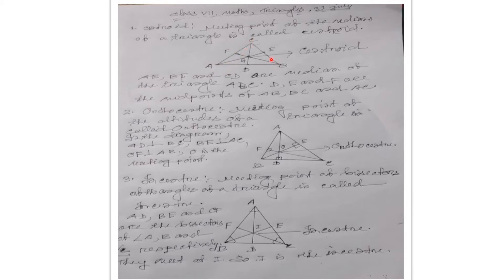Therefore, the meeting point of the medians of a triangle is called centroid. If D is the midpoint of AB, then AD equals BD. Here CE equals BE, and CF equals AF. A triangle has three medians because it has three midpoints of the opposite sides, and that meeting point is called centroid. Generally it is denoted by Z. AE, BF and CD are the medians of triangle ABC. D, E and F are the midpoints of AB, BC and AC respectively.